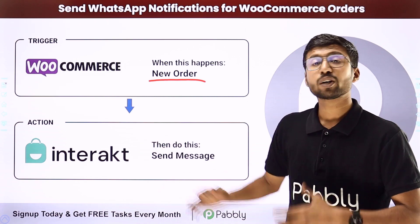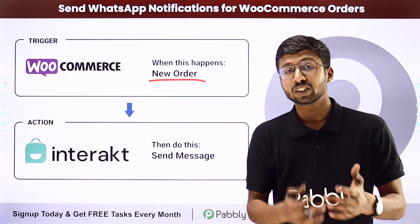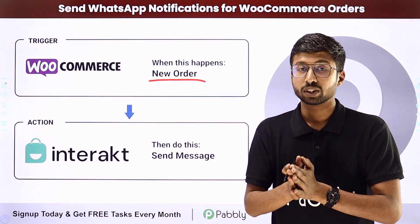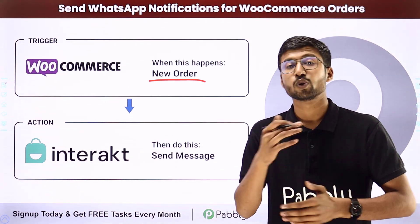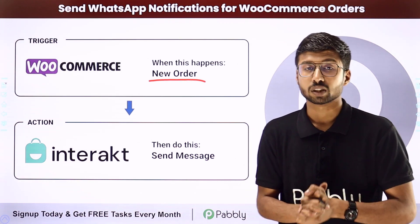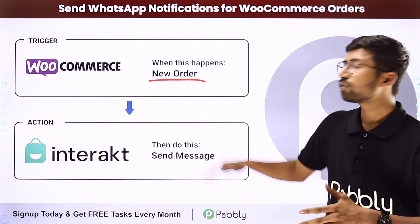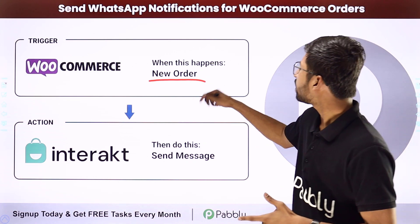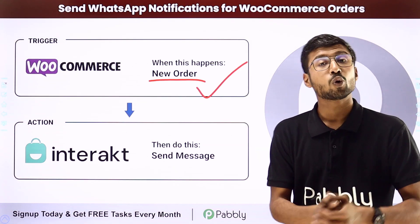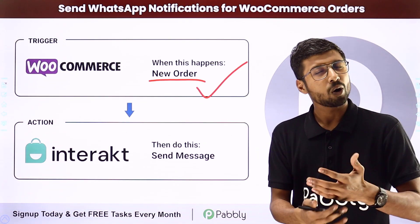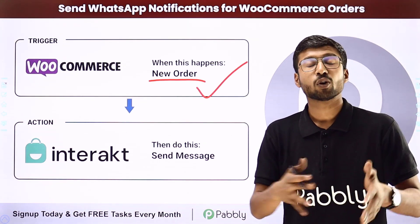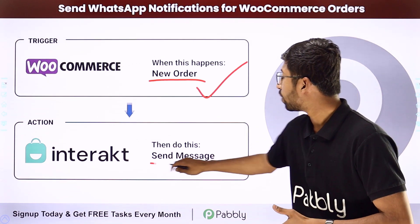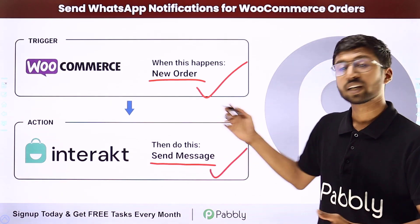We will be using Interakt to send WhatsApp messages to customers. Interakt is the API service of WhatsApp using which you can directly send WhatsApp messages to your customers. We are going to set up an automation in which whenever a new order is received on our WooCommerce store, automatically an order confirmation message will be sent to the customer who has placed the order using Interakt.